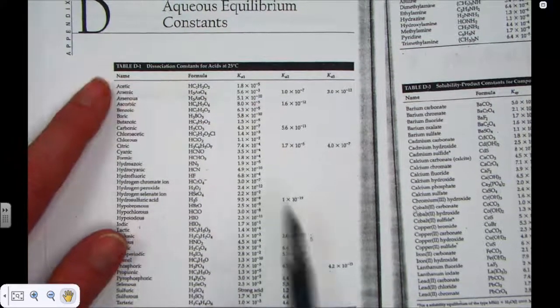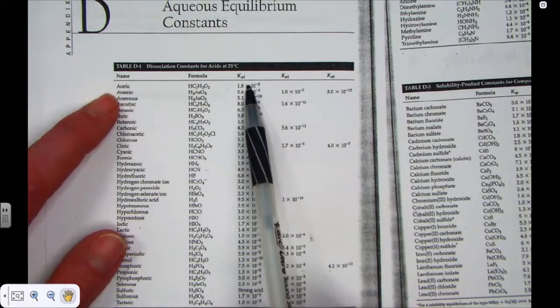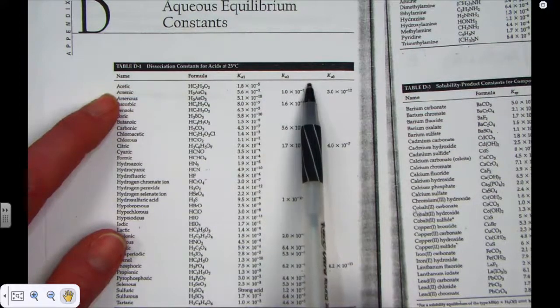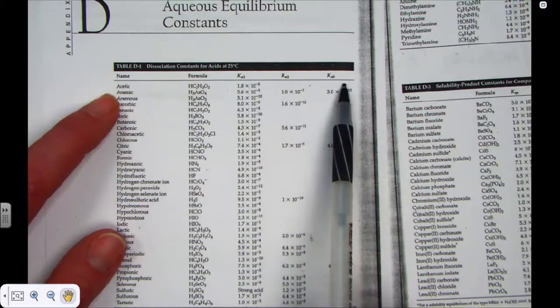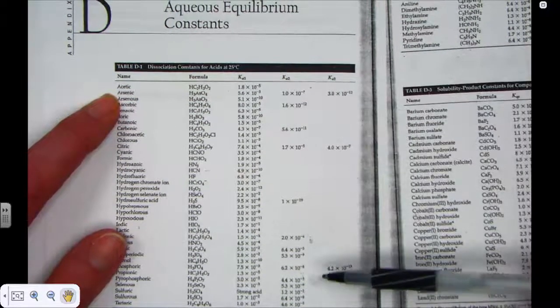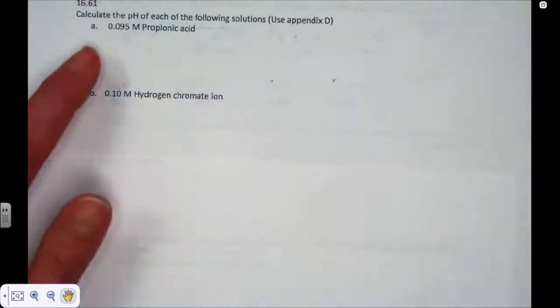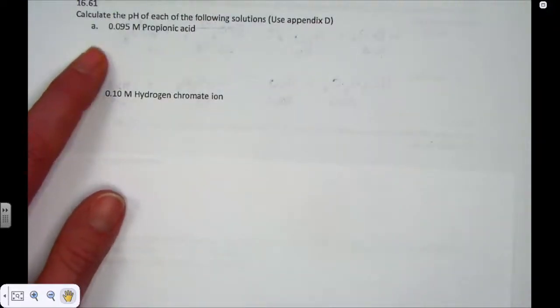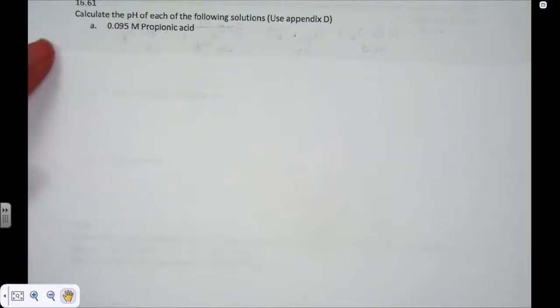These are the constants we're looking at. Ka1's for the loss of the first proton, Ka2 for the second, and the third Ka3 for polyprotic acids. So this is a reference table that we'll be needing in order to calculate the pH for each of these. Let me model the first one, letter A.